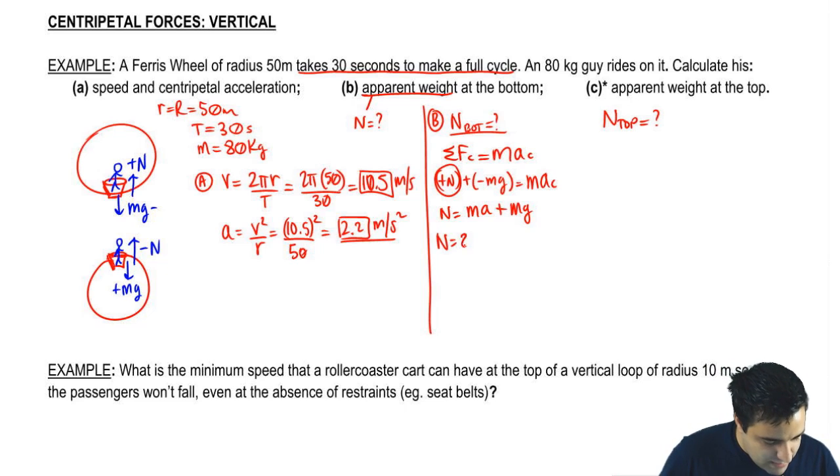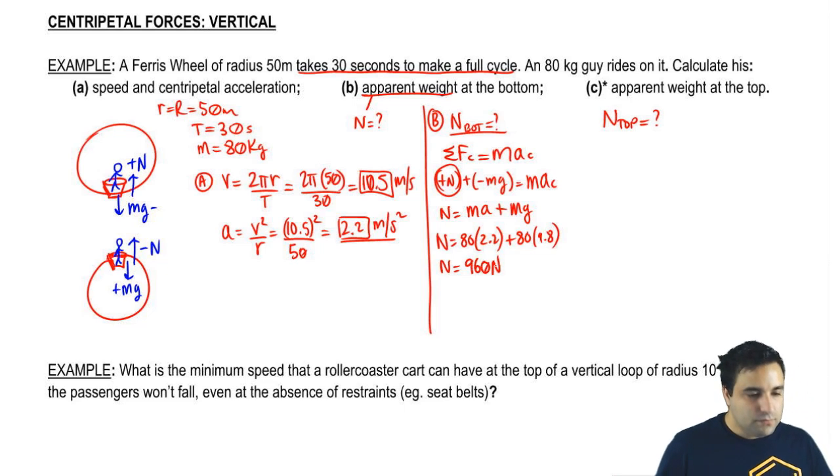So normal will be 80 times 2.2 plus 80 times 9.8. And if you plug this in, you get 960 Newtons.